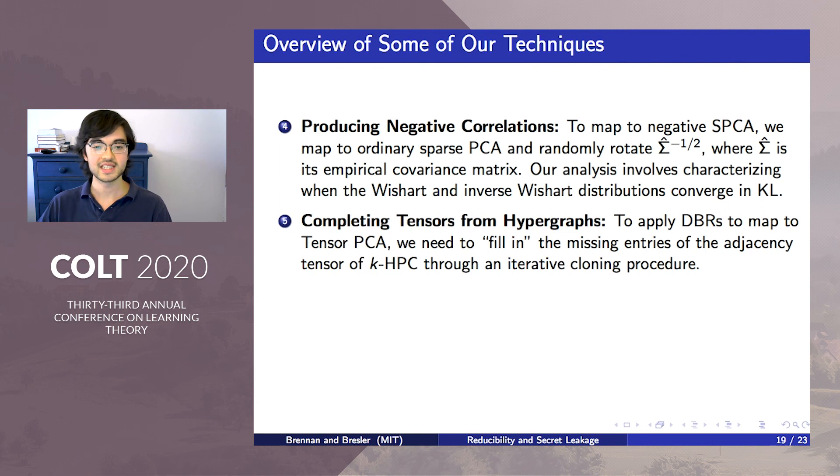Another of our techniques arises because of a technical difficulty in carrying out our reduction to tensor PCA. To use dense Bernoulli rotations to reduce to tensor PCA, there are problematic zeroed out entries in the adjacency tensor of hypergraph PC. We introduce an involved iterative cloning procedure that overcomes this issue.